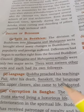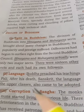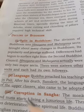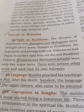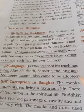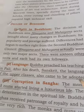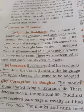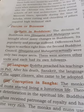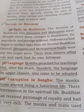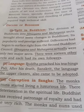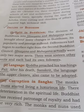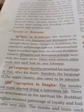The second point is the language problem. Buddha preached his teachings in Pali language, leaving aside Sanskrit. After his death, Sanskrit, the language of the upper classes, came to be adopted again. Sanskrit was not possible to understand for everyone — only the rich and upper classes knew it. So quite many people left Buddhism and adapted to other religions.